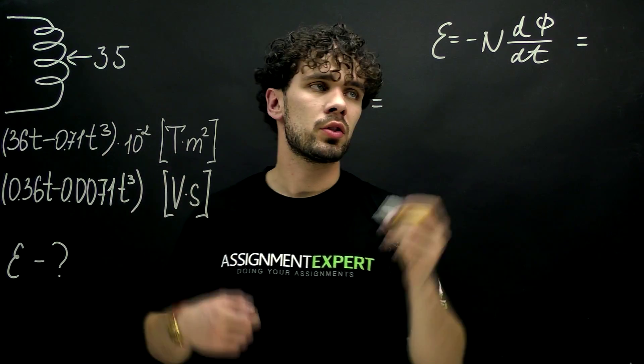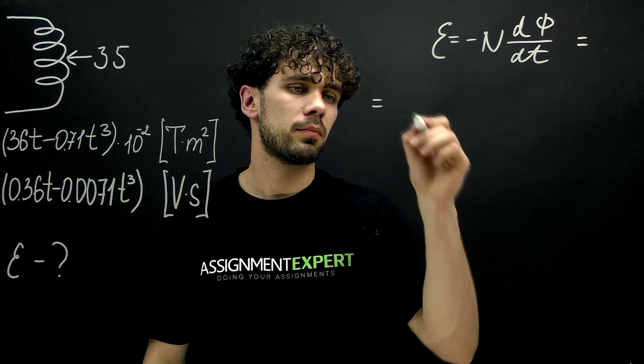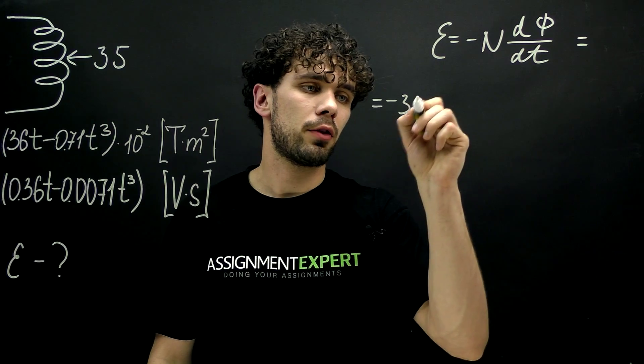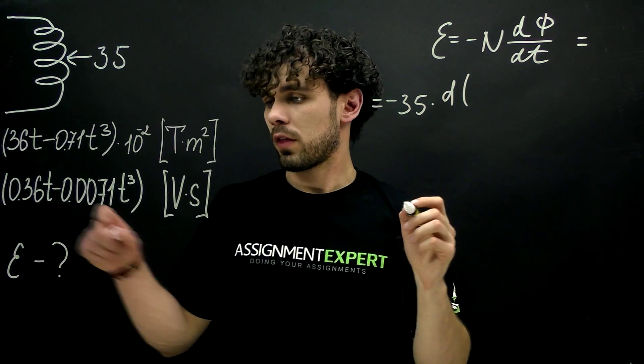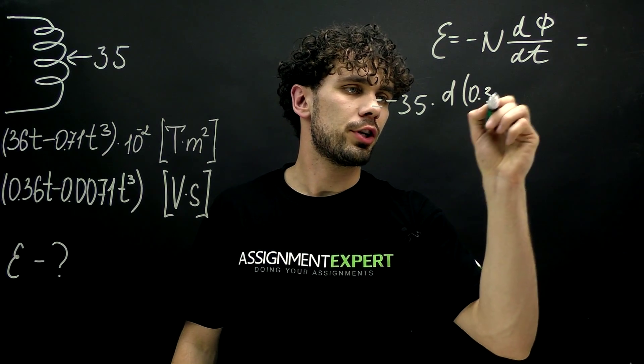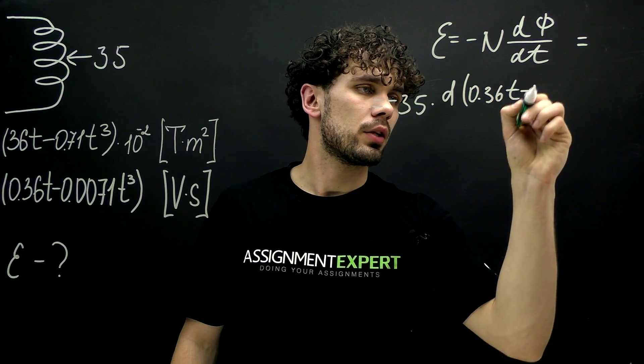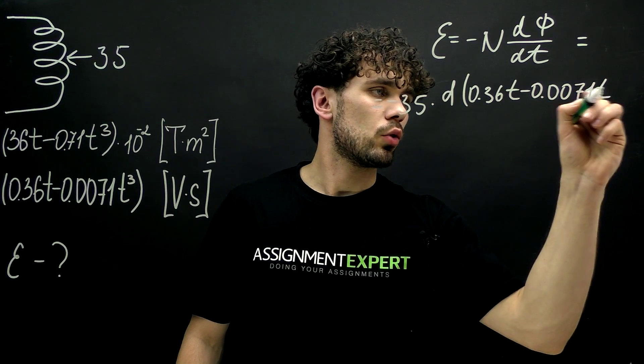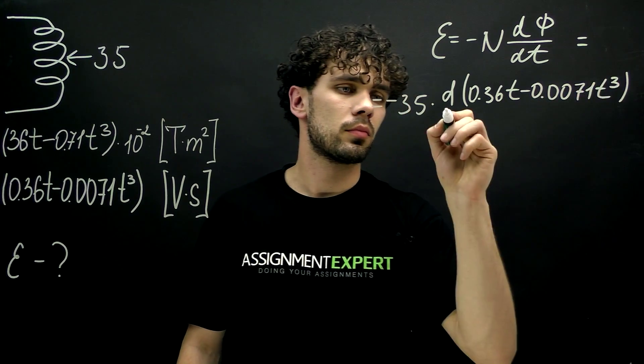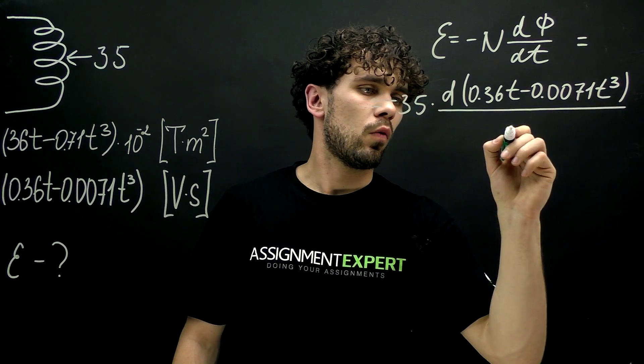We have all the numbers so we can find our EMF. It goes like negative 35 times derivative of this expression 0.36 t minus 0.0071 t cubed over dt.